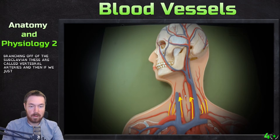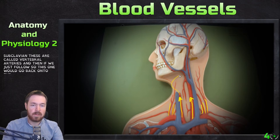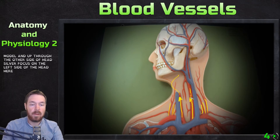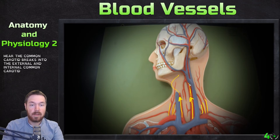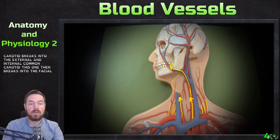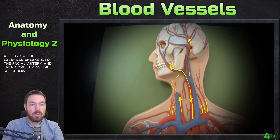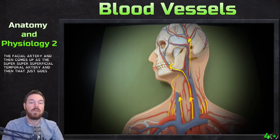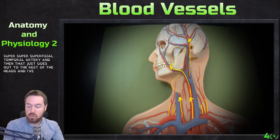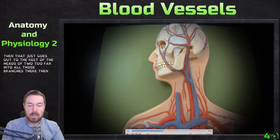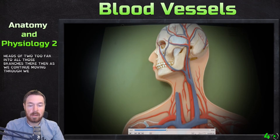The vertebral artery goes up through the other side of the head. Focused on the left side, the common carotid breaks into the external and internal carotid. The external breaks into the facial artery and comes up as the superficial temporal artery, which goes out to the rest of the head. We won't dive too far into all those branches.